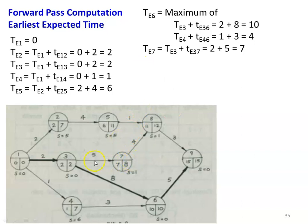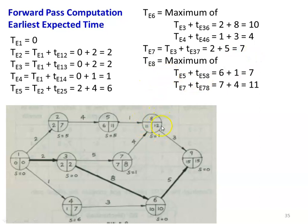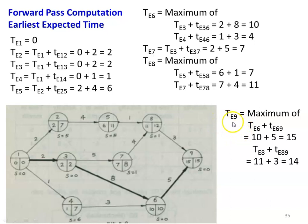TE7: there is only one incoming arrow, so TE7 equals TE3 plus t(3,7) equals 2 plus 5 equals 7. TE8: there are two incoming arrows, so we take the maximum of (TE5 plus t(5,8) equals 6 plus 1 equals 7) and (TE7 plus t(7,8) equals 7 plus 4 equals 11). The maximum time equals 11. TE9: again maximum of two incoming arrows — (TE6 plus t(6,9) equals 10 plus 5 equals 15) and (TE8 plus t(8,9) equals 11 plus 3 equals 14). The maximum value is 15. All earliest expected time TE values for all events are now calculated.